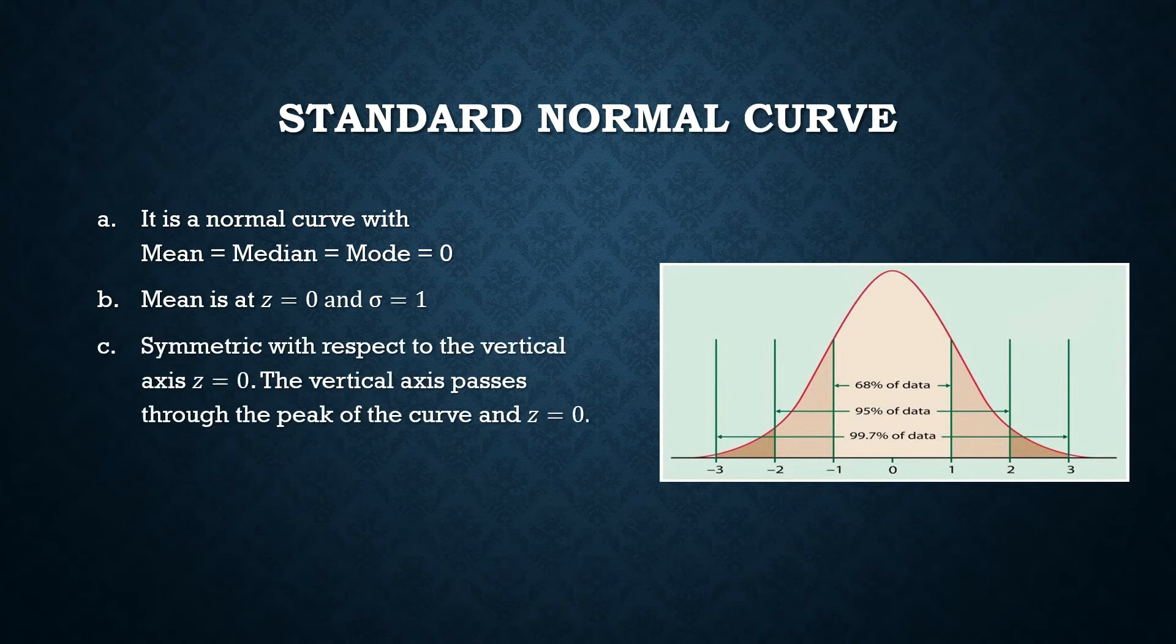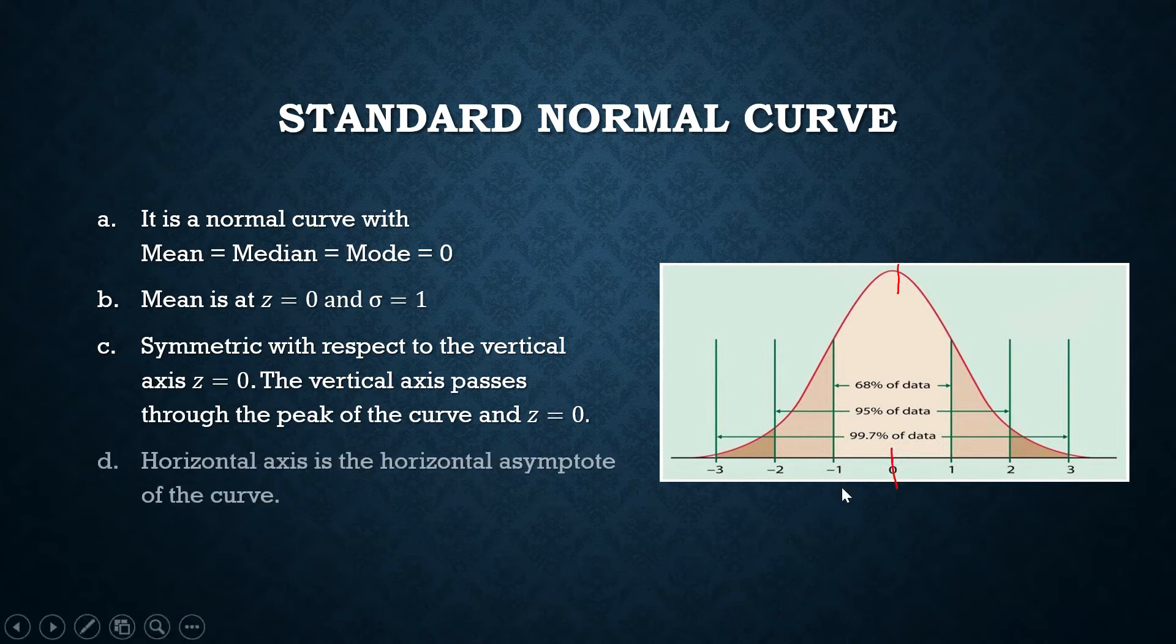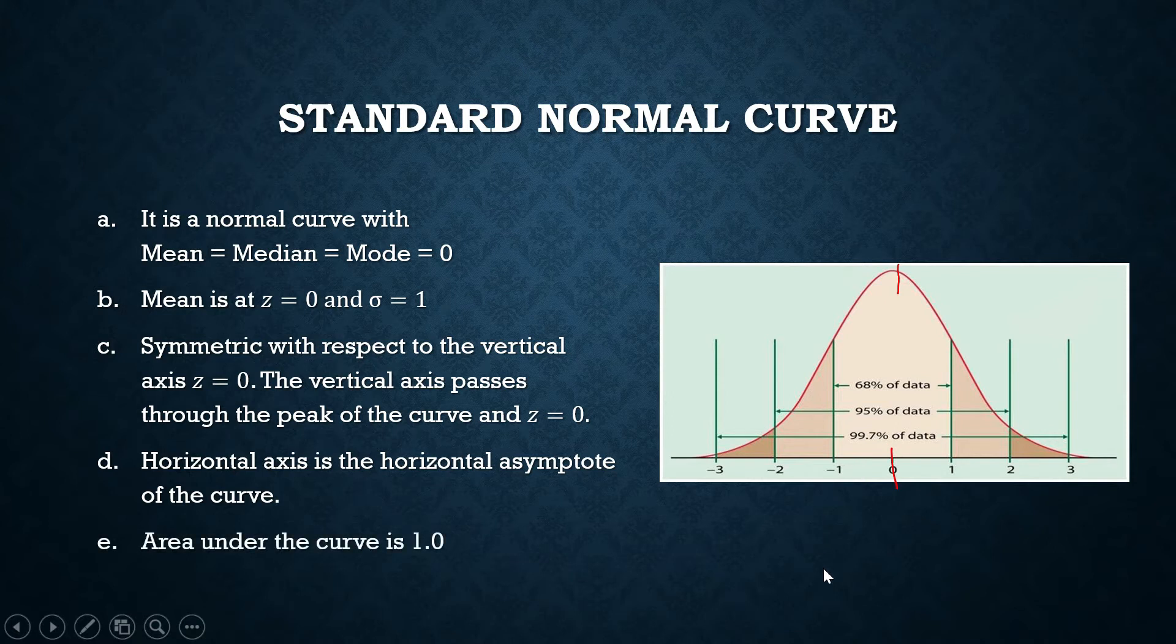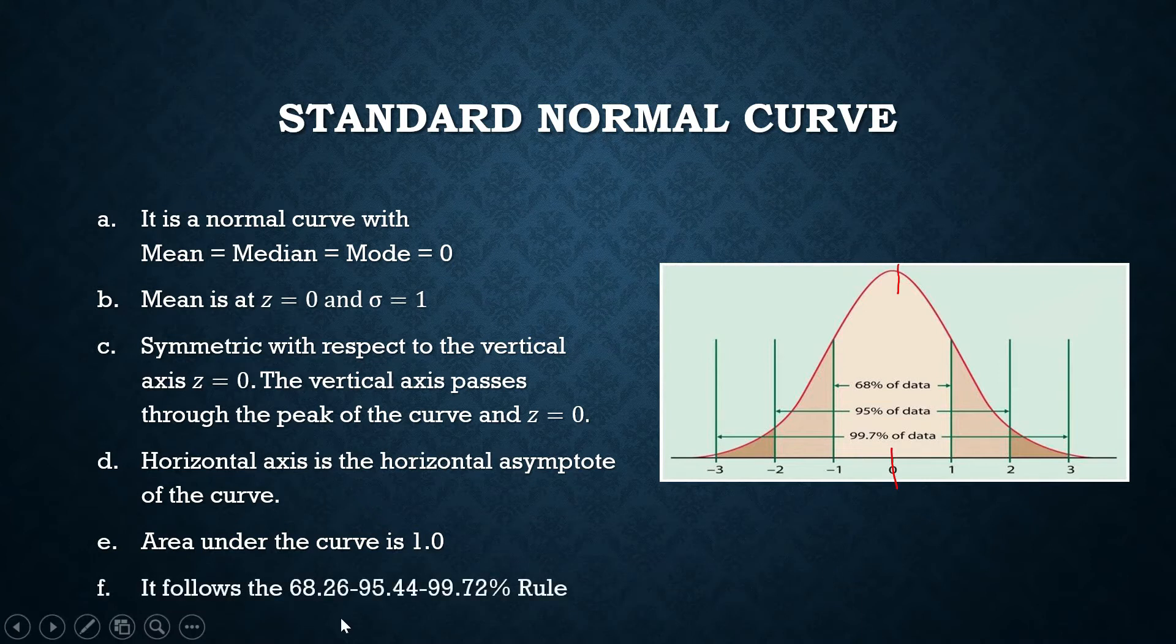Just like with any normal curves, it is symmetric with respect to the vertical axis, Z equals 0. It passes through the peak of our curve. It passes through the mean. We have a horizontal axis, and it is also the horizontal asymptote of the curve. Area under the curve is 1.